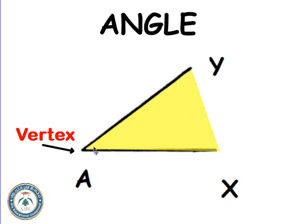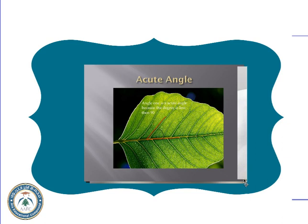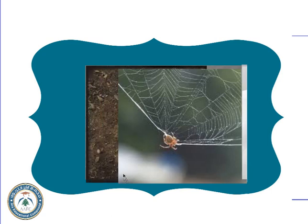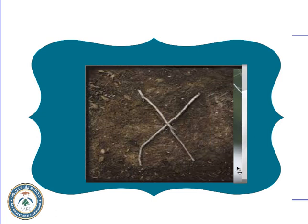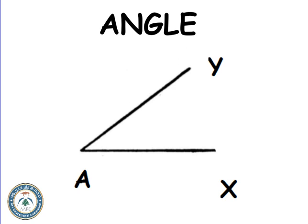You can see the yellow part — that is the space, that is the angle. Let's look at examples of angles in real life. Here we have many angles, here we have four angles, here we have five special angles — we will talk about them later.